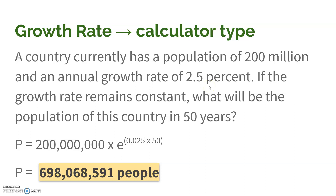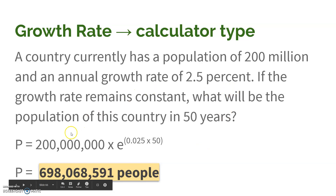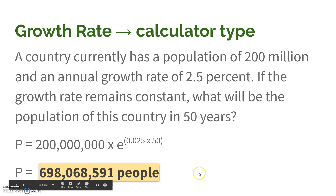For example, a country with 200 million people has a growth rate of 2.5%. Assuming that stays constant, what would the population be in 50 years? We know to use this formula — rather than the doubling time — because we're given a specific time frame. We take the initial population and multiply by E raised to 0.025 (which is 2.5%) times 50 years. In 50 years, that gives us just over 698 million people if the population growth rate remains the same.